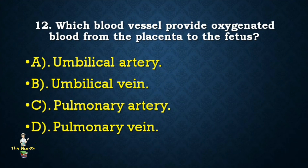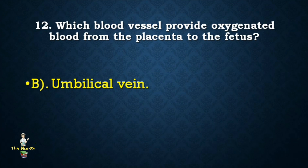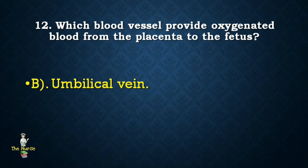Next question: Which blood vessels provide oxygenated blood from the placenta to the fetus? Options: umbilical artery, umbilical vein, pulmonary artery, pulmonary vein. Correct answer is umbilical vein. The umbilical vein carries oxygenated nutrient-rich blood to the fetus, while two umbilical arteries carry deoxygenated nutrient-depleted blood away.